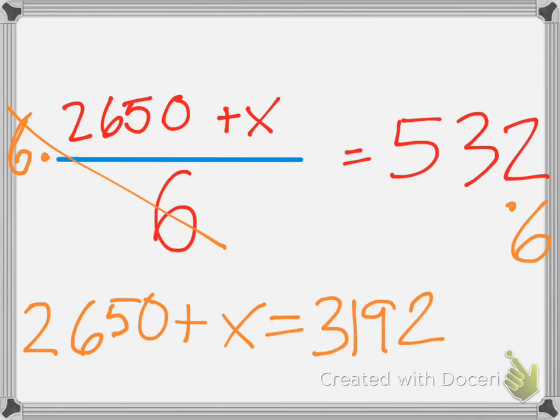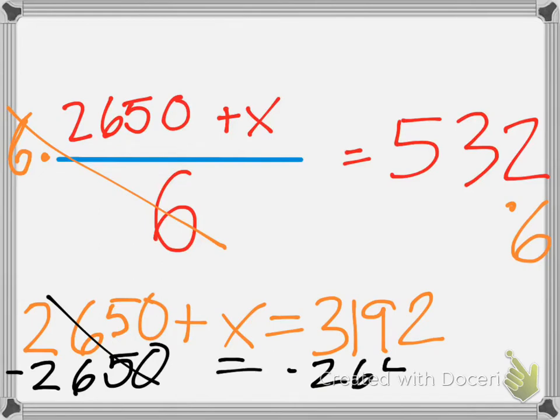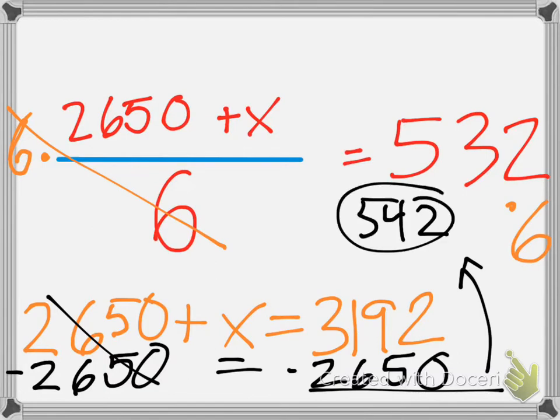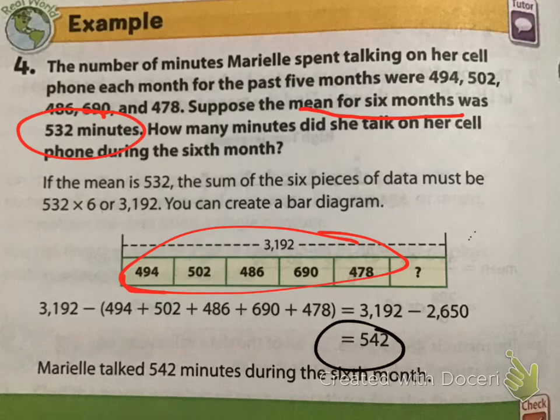That cancels out. And 532 times 6, we get 2650 plus x equals 3192. So, 2650 plus x is equal to 3192. In this case, our last step for isolating the variable is we're going to subtract this number from both sides. So, we're going to subtract that number. And what we get is 542.